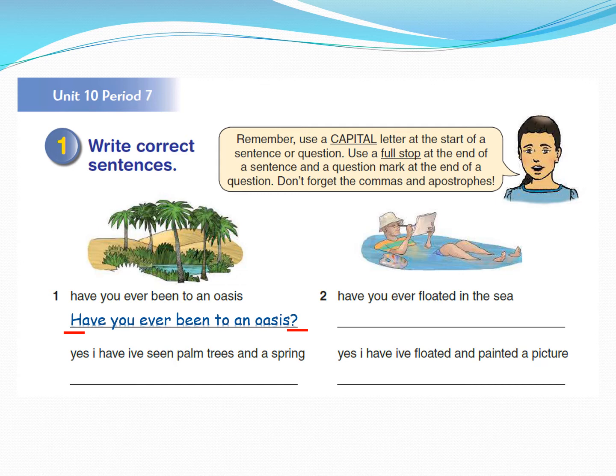So we will capitalize the H and put a question mark at the end. The answer is: 'Yes, I have. I've seen palm trees and a spring.' There are lots of corrections here: capitalize the Y, put a comma, capitalize the I, put a full stop, capitalize the I again, put an apostrophe — don't forget the apostrophe — and at the end put a full stop.